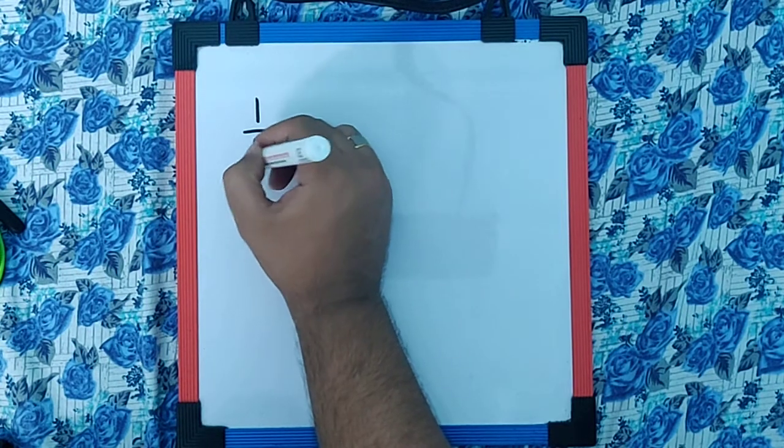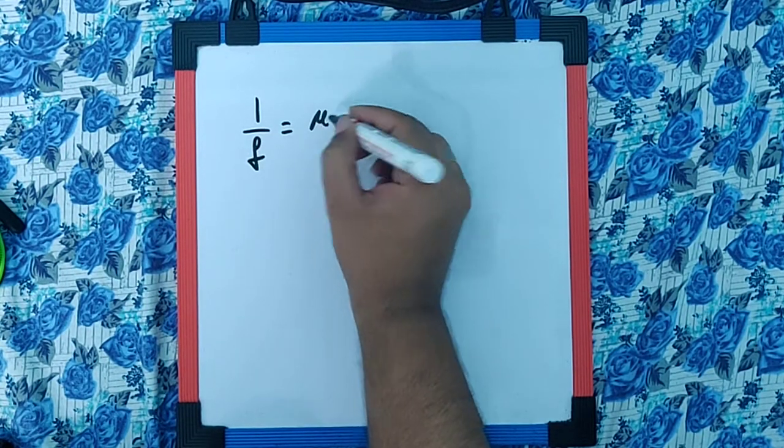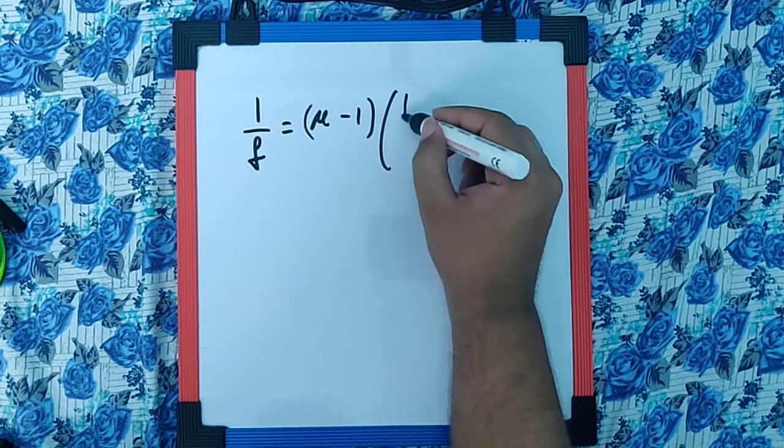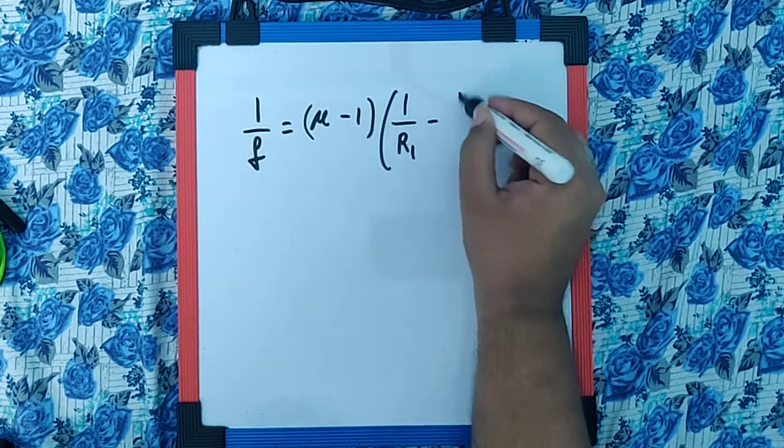We know the focal length formula is 1/F = (μ - 1) times (1/R1 - 1/R2), assuming the surrounding medium is air.